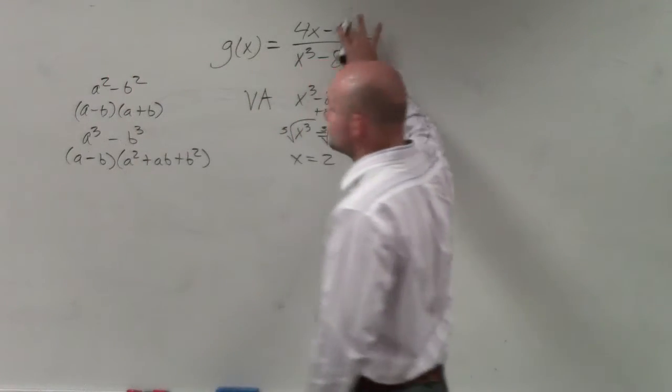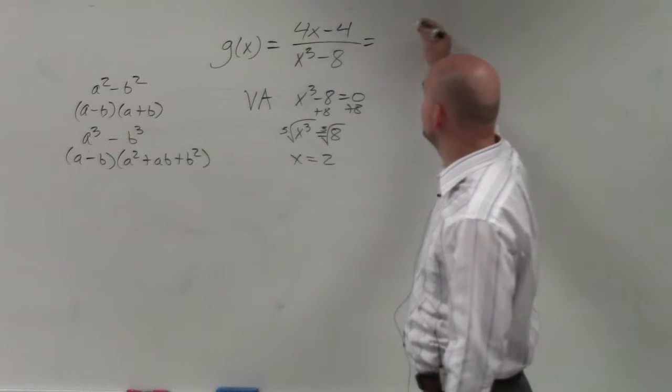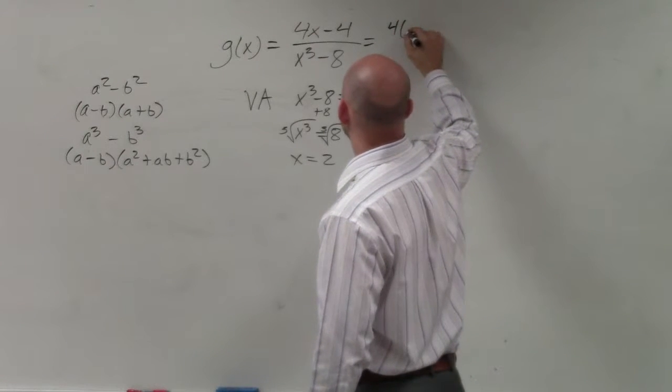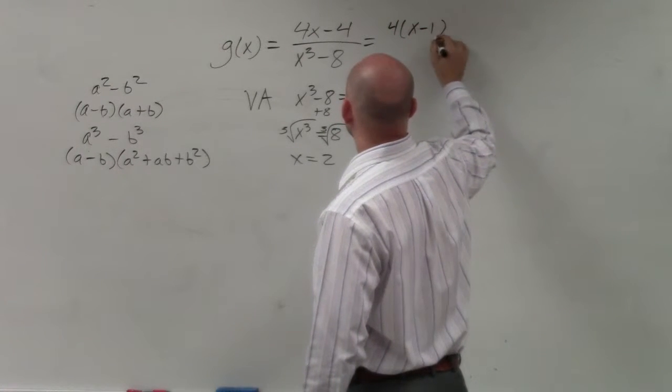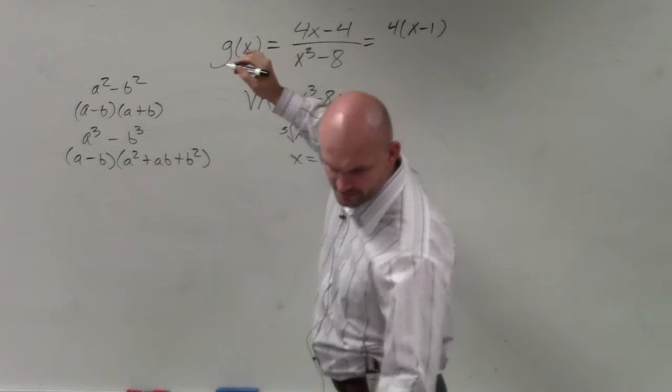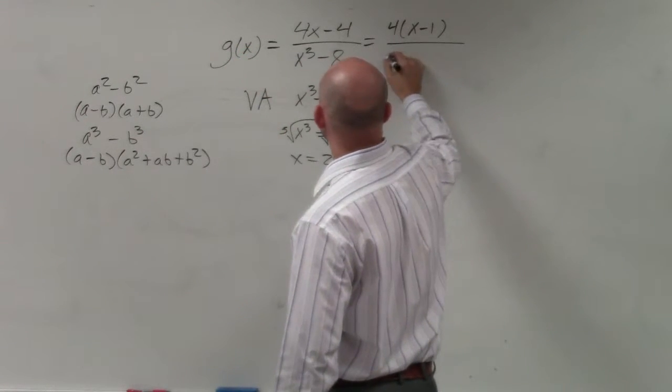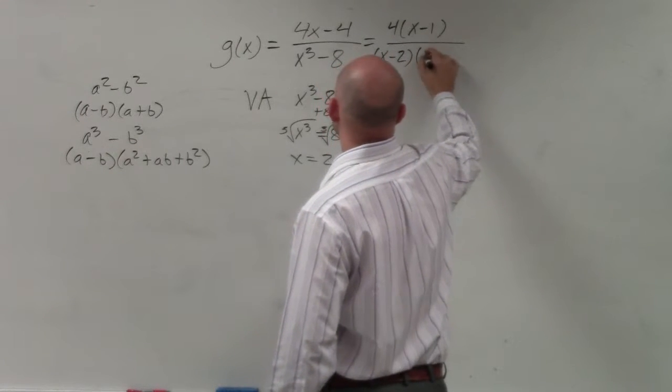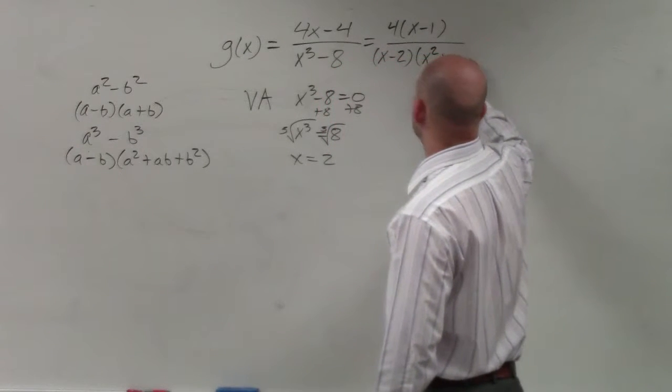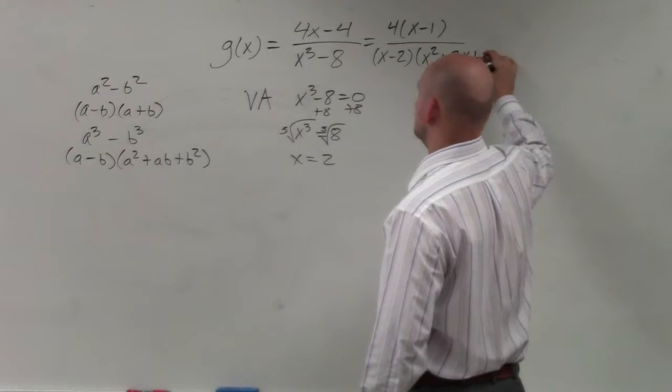To do that, I have to see if I can simplify this expression. I can factor out the numerator, and then this becomes x minus 2 times x squared plus 2x plus 4.